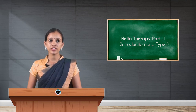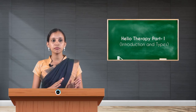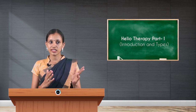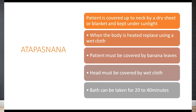The next type is sunbath with wet cloth. The person first lies down on a mat and covers the body with a dry sheet or blanket. When the body starts producing heat, the body is then covered with a wet cloth. The head must also be covered with the wet cloth. It can be taken for 20 to 40 minutes.